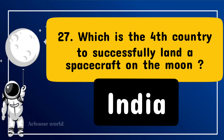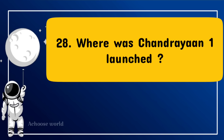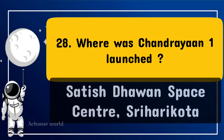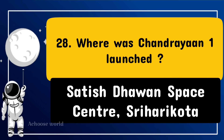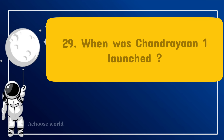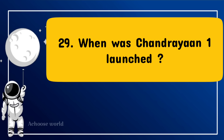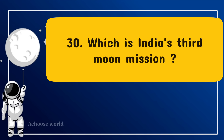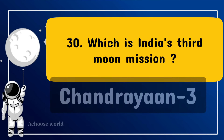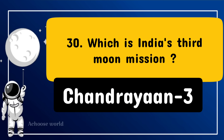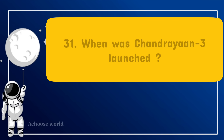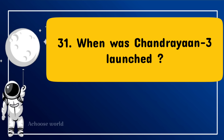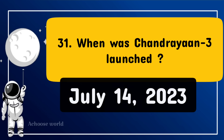Which is the fourth country to successfully land a spacecraft on the Moon? India. Where was Chandrayaan 1 launched? Satish Dhawan Space Centre, Sriharikota. When was Chandrayaan 1 launched? October 22, 2008. Which is India's third Moon mission? Chandrayaan 3. When was Chandrayaan 3 launched? July 14, 2023.